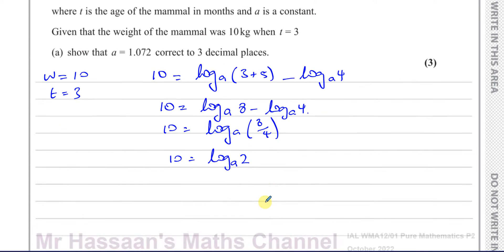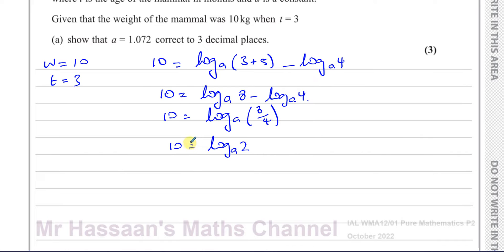So now I can rewrite this in index form. So remember, if I have, for example, log base p of q equals r. This is the base, this is the power. So this is like p to the power of r equals q. Base, power, answer. So a to the power of 10 equals 2. So we can rewrite this as a to the power of 10 is equal to 2.